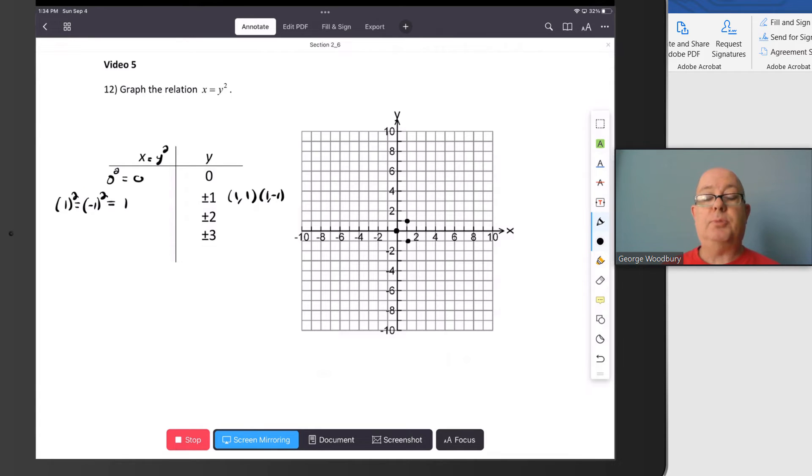When y is plus or minus 2, both, either one of those raised to the second power is going to give us 4. So that's 4, 2, and 4, negative 2.